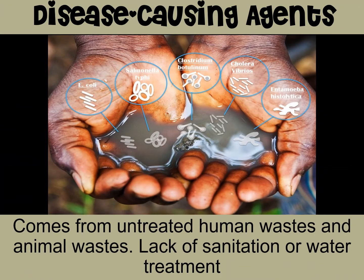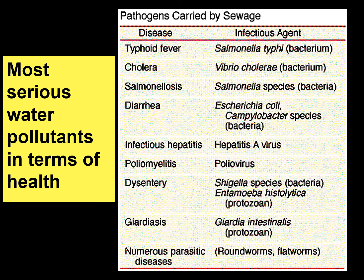Our third category is disease-causing agents. There are many diseases that can be found in water and these usually come from untreated human or animal waste being placed into the water. That is usually created from a lack of general sanitation in cities and not having water treatment facilities to clean the water of these disease-causing agents. This chart shows many of the pathogens that can be carried by raw sewage, such as Salmonella, E. coli, and Giardia — all very serious water pollutants that can really harm humans if ingested.